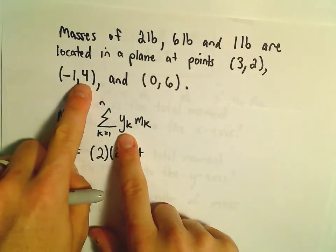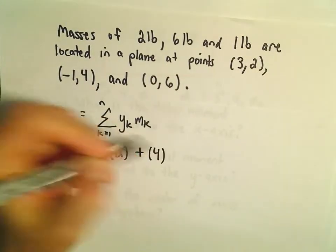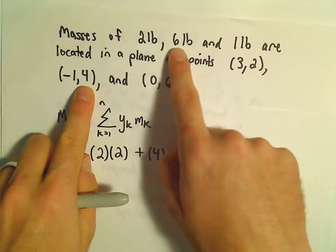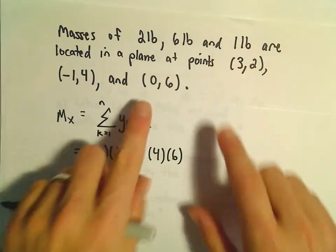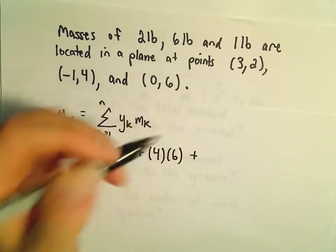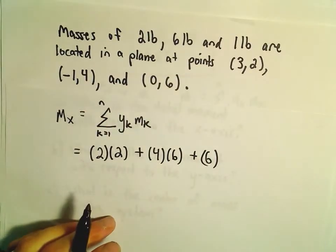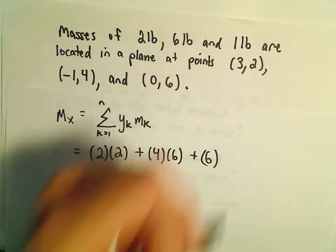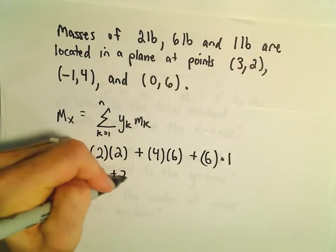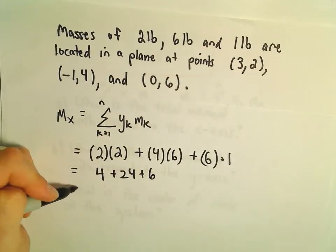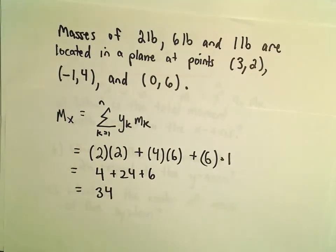Then we look at the last point, which has a y coordinate of 6, and multiply it by its corresponding weight, which is 1 pound. We've got 4 plus 24 plus 6, so we're left with the value 34.